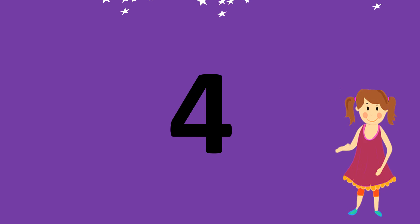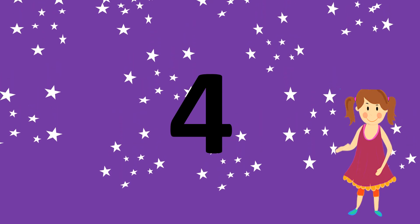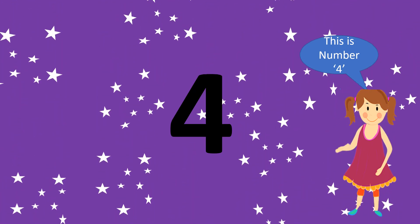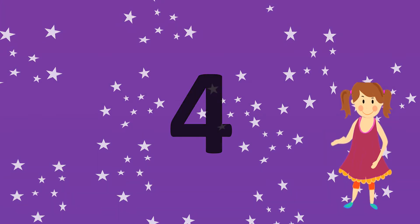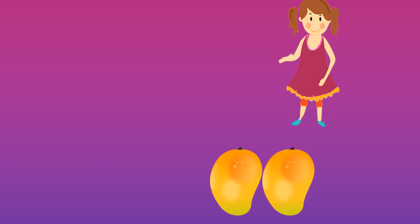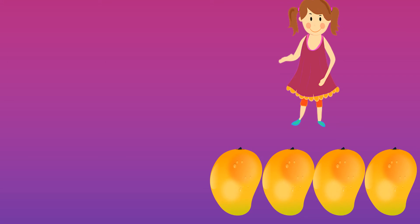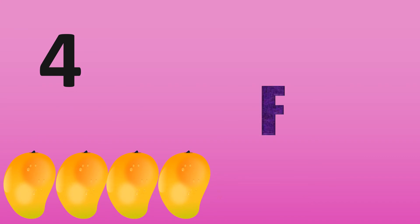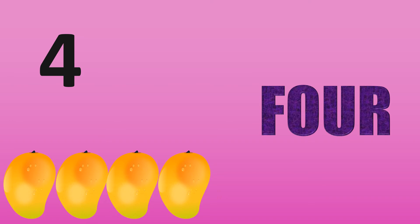Let's move on to our next number. Which is this number? This is four. That's right, it's four. Now let's count how many mangoes there are. There are four mangoes. That's correct — there are four mangoes. Now let's spell the number four. F-O-U-R, 4.